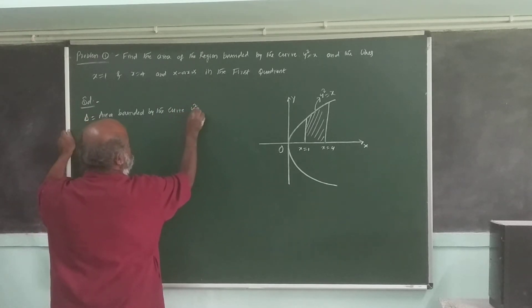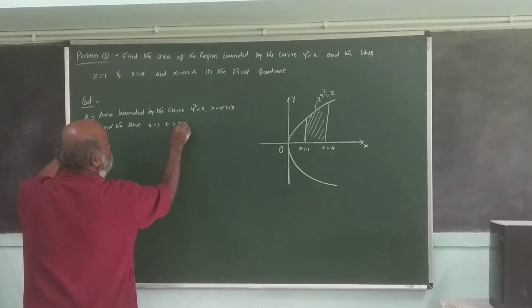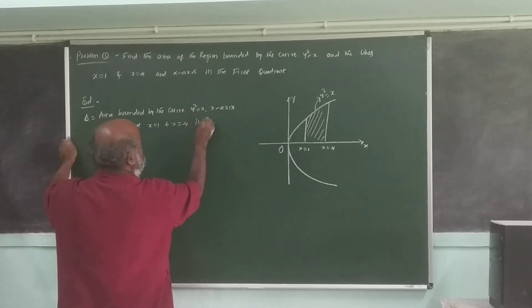Curve y-square is equal to x, x-axis, and the lines x is equal to 1, x is equal to 4 in the first quadrant.